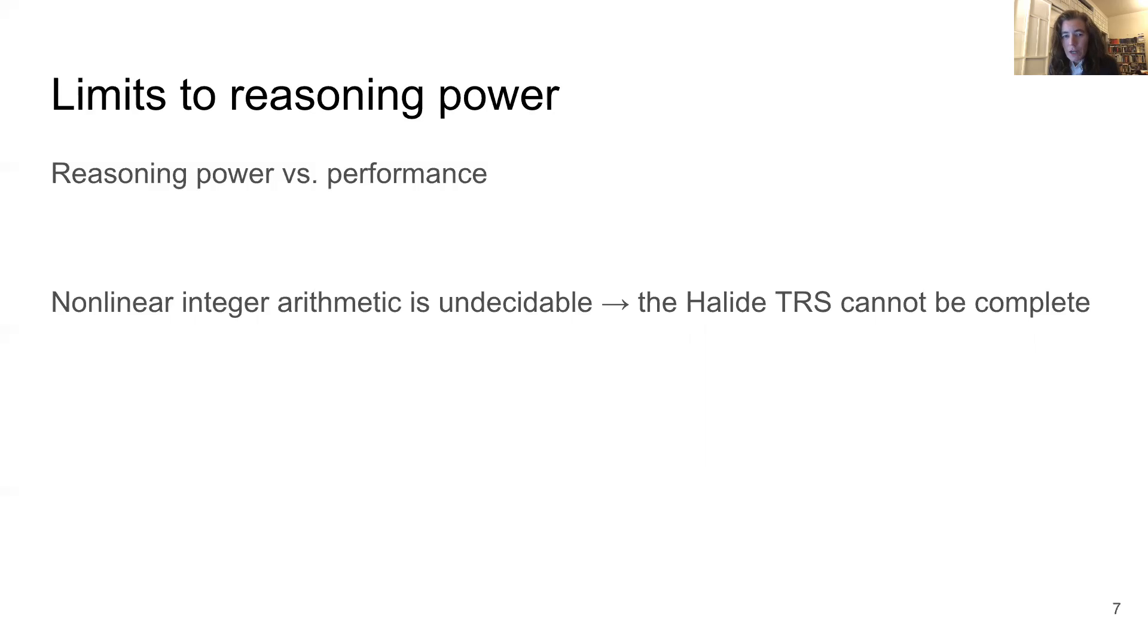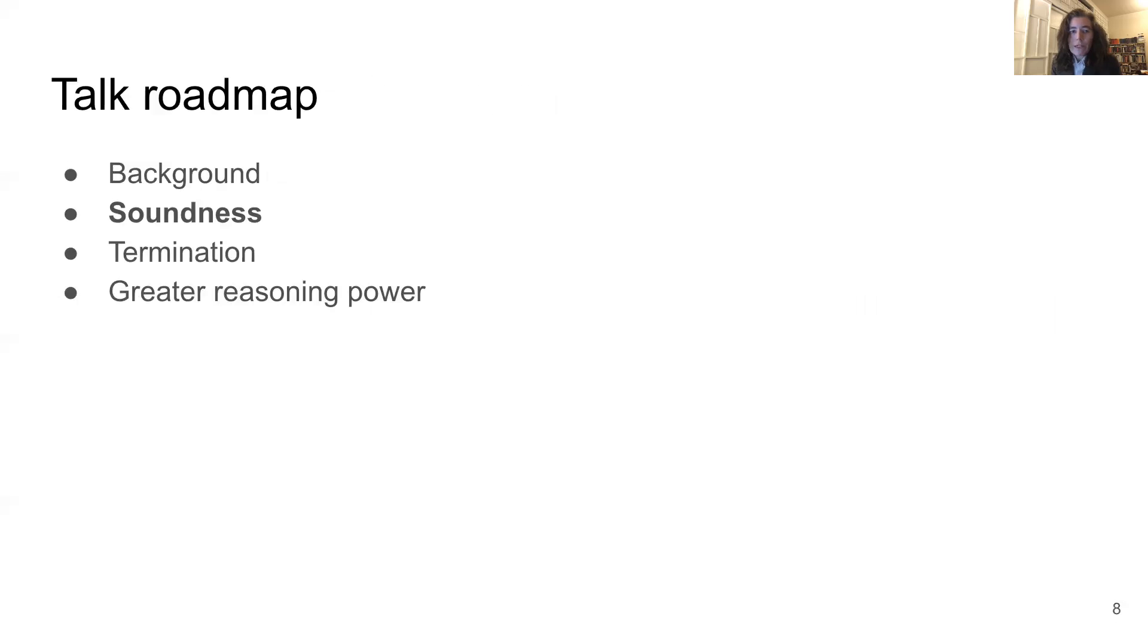What this means is that the term rewriting system can never be complete, it can never be perfect. But even though it's impossible to fully solve this domain in the general case, we can still make a lot of progress in practical applications. Our goal is to make the TRS as strong as possible while keeping these limitations in mind. So now we're ready to jump into our work, and let's begin by talking about the proof of soundness. The task here is pretty straightforward. We need to show that for every rule in the term rewriting system, it's semantic preserving.